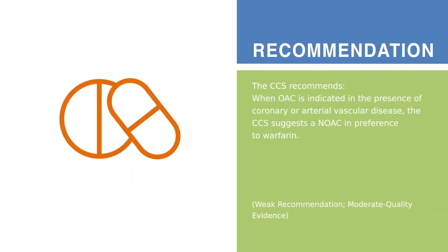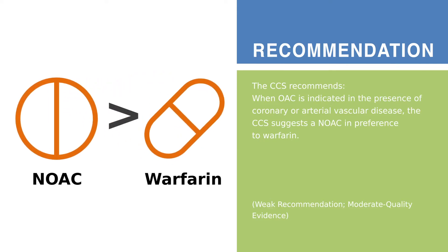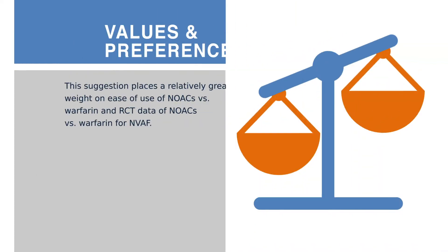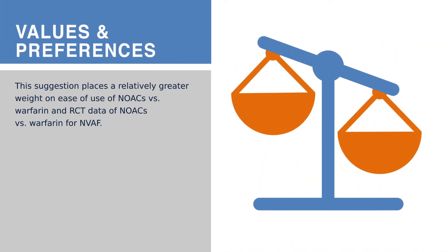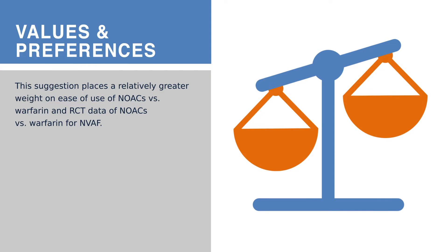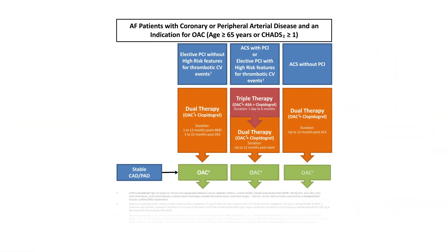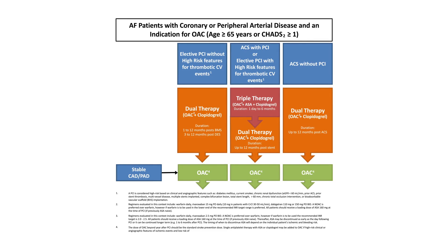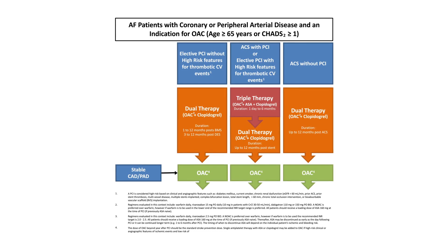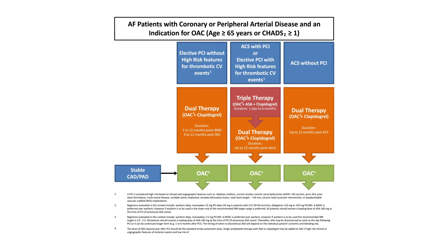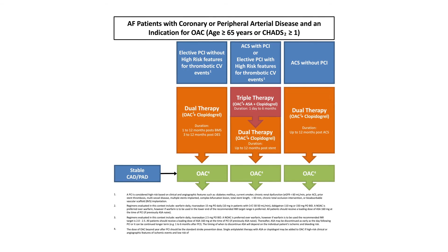Whenever oral anticoagulation therapy is indicated in the presence of coronary or arterial vascular disease, the CCS suggests a NOAC in preference to warfarin. This suggestion places relatively greater weight on the ease of use of NOACs and on the data from RCTs of NOACs versus warfarin for nonvalvular AF. This algorithm outlines the decision pathway for the management of antithrombotic therapy in patients with concomitant AF and coronary artery disease or peripheral artery disease.